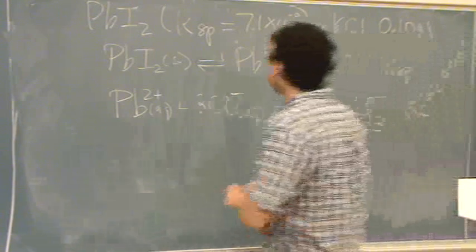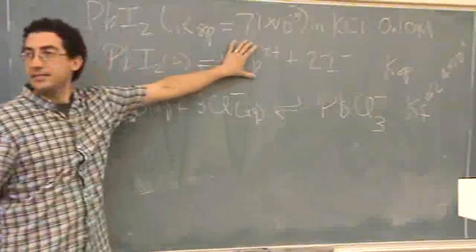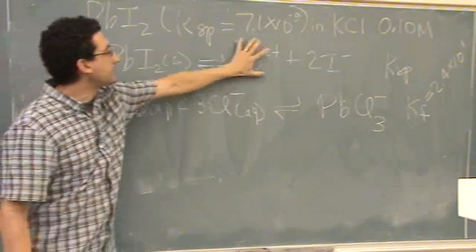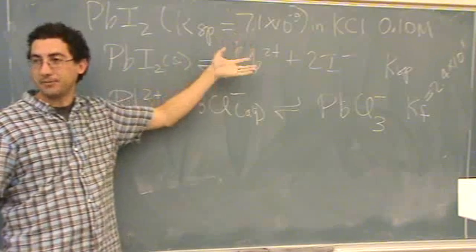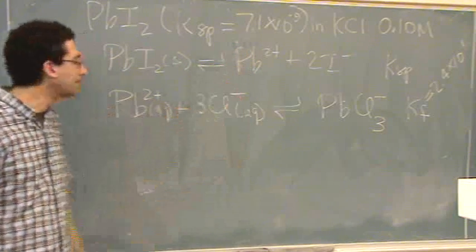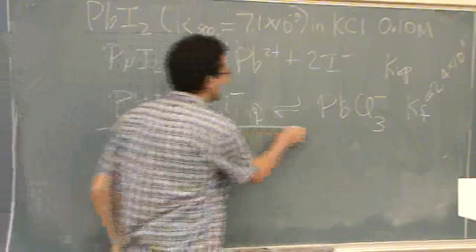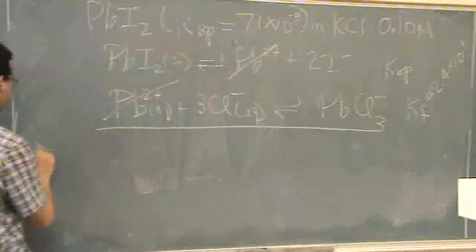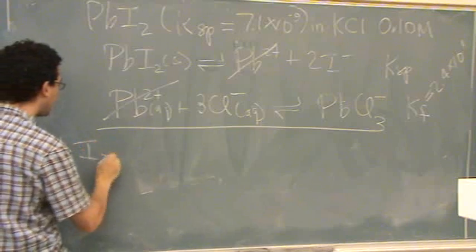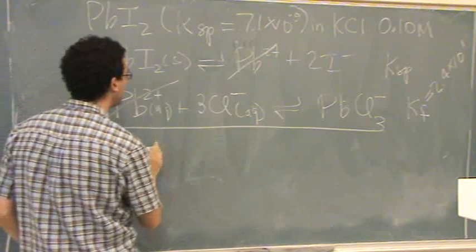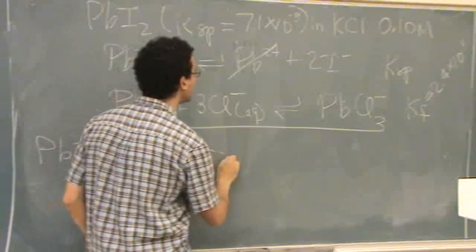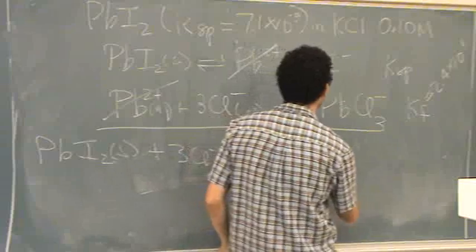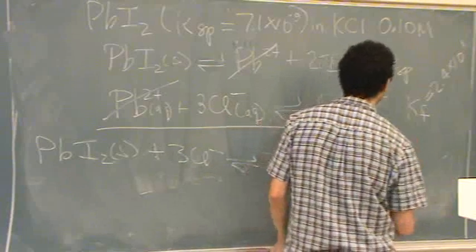So what's going to happen, we start producing this, once we add in the chlorine from the KCl, this is going to start disappearing, it'll shift more to the right, and it'll be slightly more soluble. So what you do to find the molar solubility, you add these up, these will cancel.